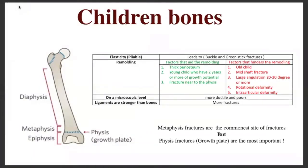The first thing I'm going to talk about is children's bones — what's the difference between a child's bone and an adult bone. The first thing is elasticity: children's bones are more elastic because they contain a lot of collagen, and that leads to specific types of fracture like buckle fractures and greenstick fractures.